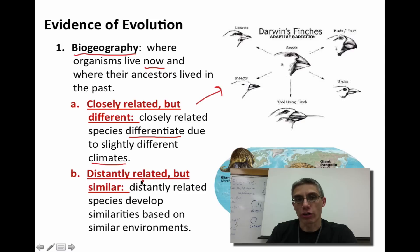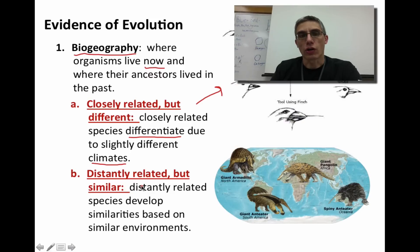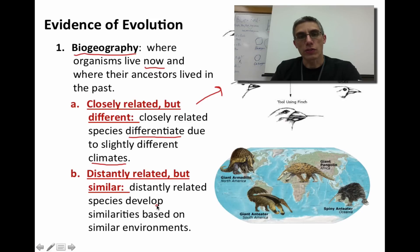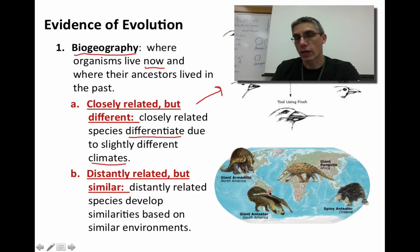The second category of biogeography involves organisms that are distantly related but appear somewhat similar. Darwin noticed that species varied globally. For example, the armadillo: distantly related species will develop similarities based on similar environments. If you look at four animals here, they all have relatively long snouts, similar body shapes, and significant tails, yet they live on different continents. They evolved to become very similar based on the influence of similar environments.